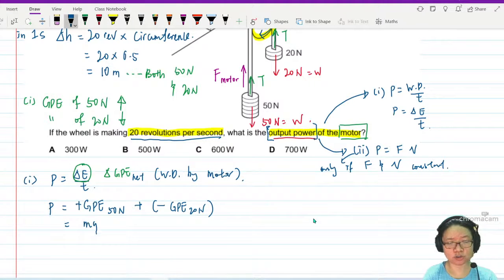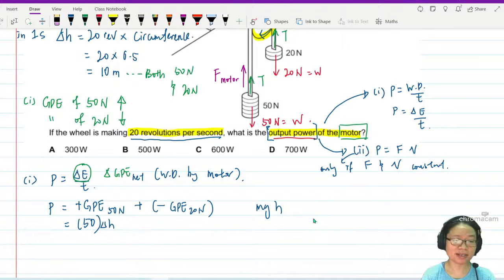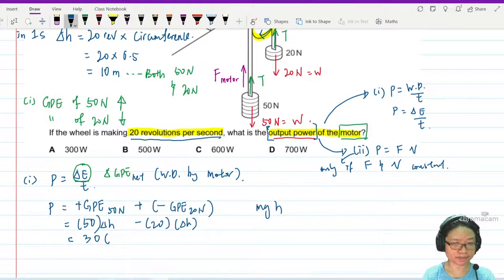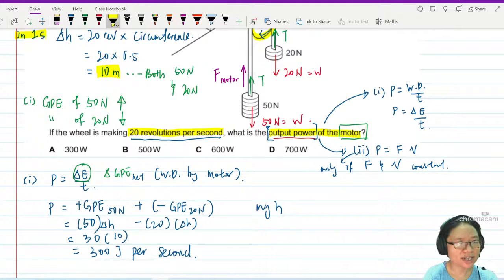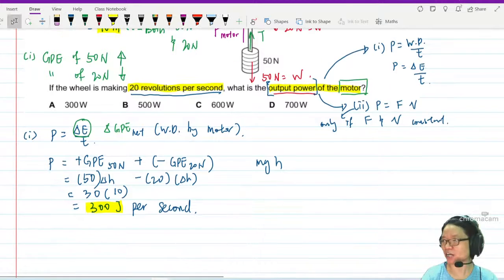Because 20 Newton will travel downwards towards the surface of the ground. So from here, we will take MG, change in height, but this MG is 50 Newton. I'm using MGH. Plus, or rather minus 20, change in height. So from here, I will have 30 multiplied by, what's the change in height again? 10. So this is 300 joule per second. Miss, why is it per second? This 10 meter is in one second. So 300 joule per second, coincidentally, is also 300 watt.